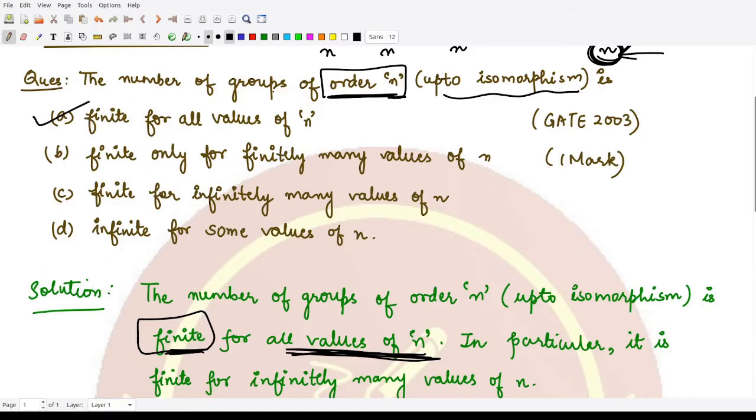In particular, from here you see option A is the correct option. The number of groups of order n up to isomorphisms are finite for all values of n. And moreover, all values of n means infinitely many values of n. Whatever value of n you take, we have finite number of groups for that.